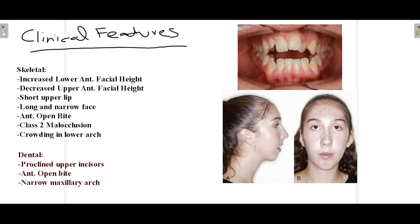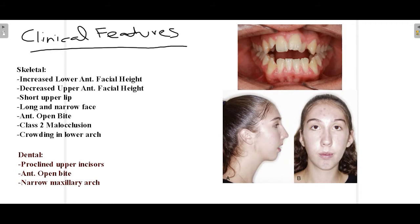There are some differences in clinical features depending on whether the OpenBite is associated with a skeletal or dental anomaly. Generally, features include an increase in lower anterior facial height, as you can see in this picture, and a decrease in upper anterior facial height. Sometimes there is a short upper lip because the upper incisors are proclined. The face is generally long and narrow, and there is a tendency to develop Class II malocclusion where the maxilla is ahead of the mandible, along with crowding.